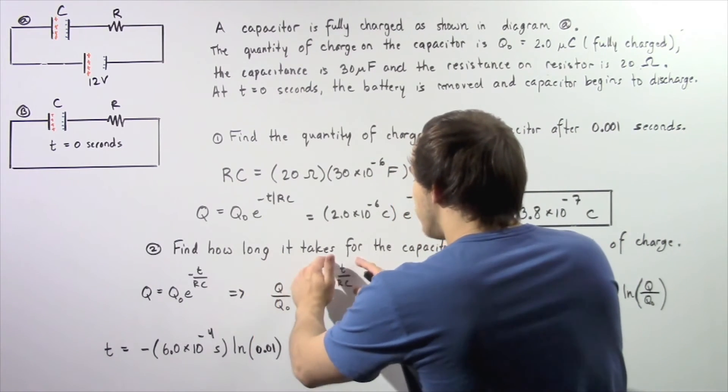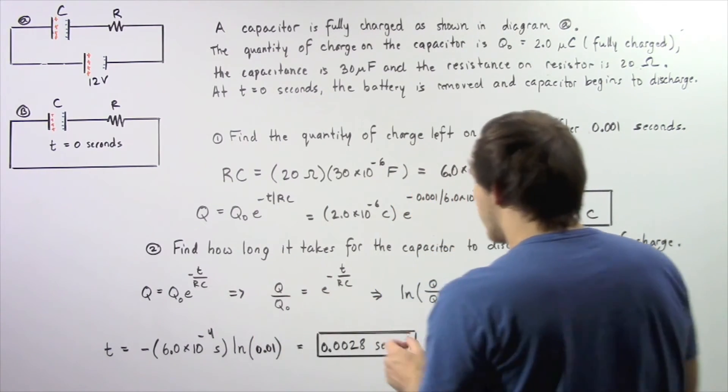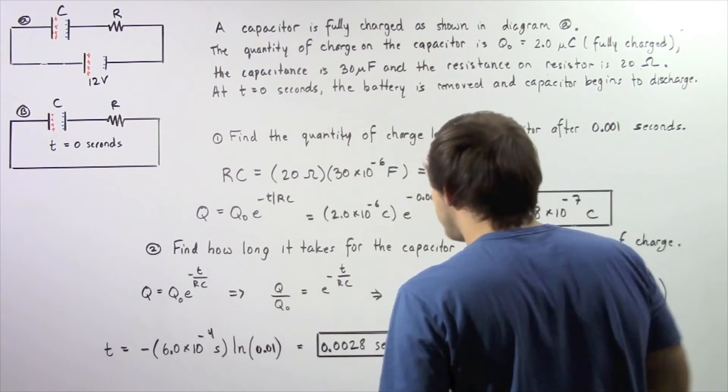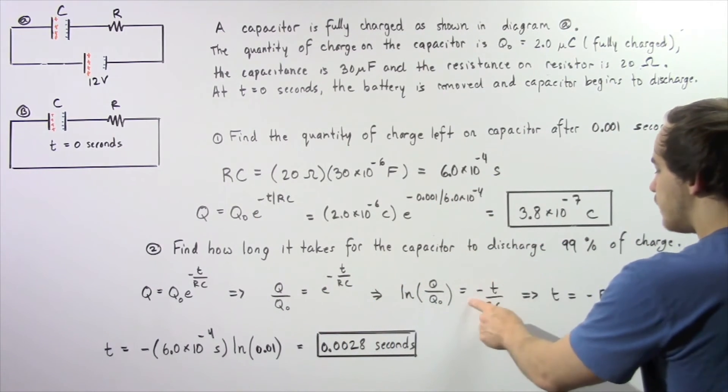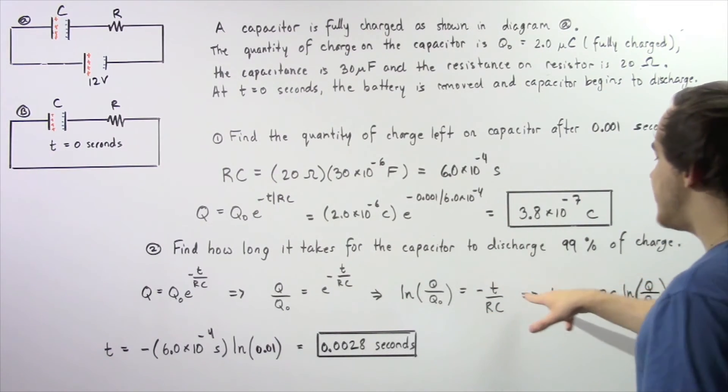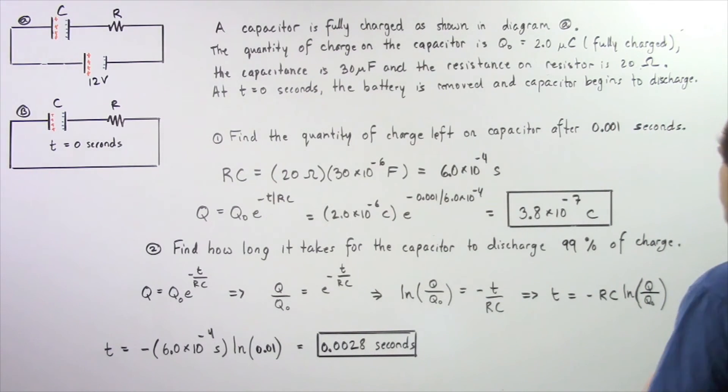Once again, we want to take the natural log of both sides. So this becomes natural log of Q divided by Q naught, and this becomes simply negative T divided by R times C. So now we solve for T, and we see that T is equal to negative of our time constant multiplied by natural log of Q divided by Q naught.